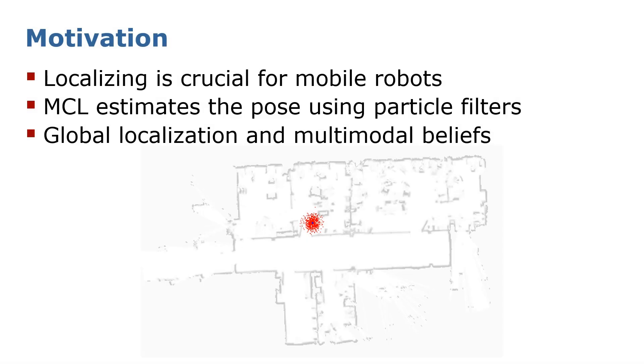Localizing in a pre-built map is very important for mobile robots and autonomous driving cars. In this work, we use Monte Carlo localization to estimate the pose with particle filters.